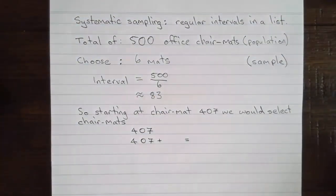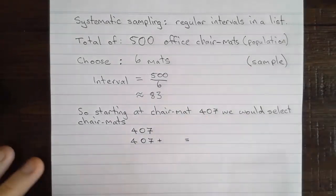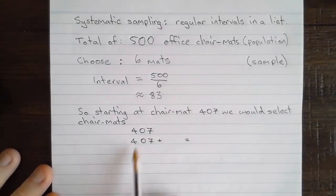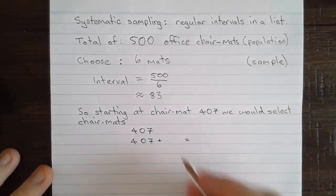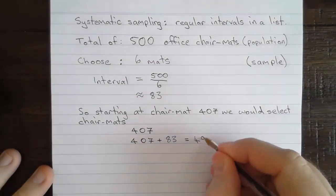So we want to choose every 83rd mat, starting at chair mat 407. That's what we're told to start at in the question. So we're going to start with number 407. Then we want to move by the regular interval of 83. 407 plus 83 will give us 490.